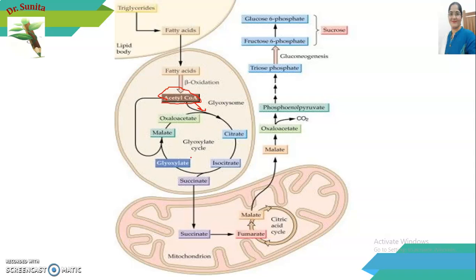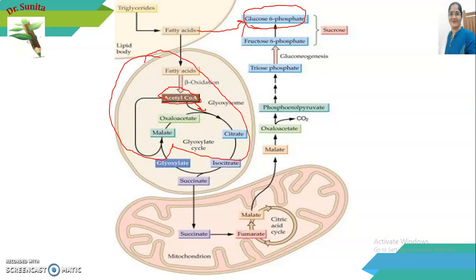This Acetyl Coenzyme A then enters the Glyoxylate cycle, which is similar in some steps to the Krebs cycle. The Glyoxylate cycle forms the products glyoxylate and succinate. The succinate enters the mitochondria, where the Krebs cycle is operative, forming malate. The malate is then removed from the mitochondria and converted to oxaloacetate, then to phosphoenolpyruvate, and finally to glucose-6-phosphate. Thus, fatty acids are converted into glucose or sugars via the Glyoxylate cycle.